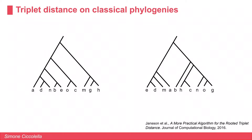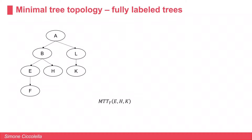A classical phylogeny is a binary tree where only the leaves are labeled, and there exist multiple interpretations of this instance. The main concept is that the distance is based on how many triplets are or are not conserved between the two trees. Our measure takes inspiration from the classical triplet distance and generalizes it to more complex types of phylogeny.